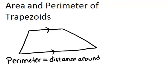So for a trapezoid, it's just like any other shape. You need to know all four sides in order to figure out the perimeter.